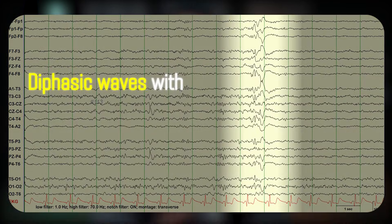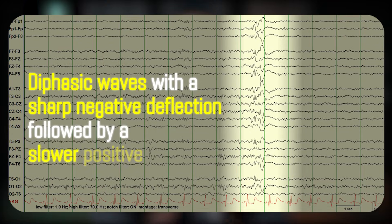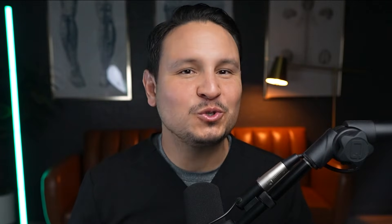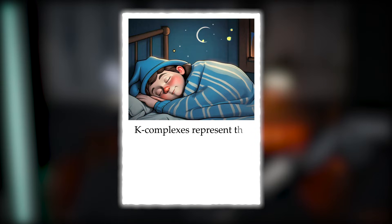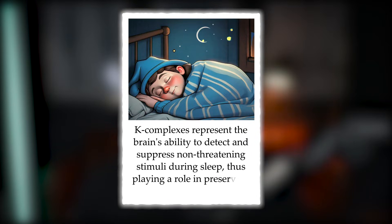K-complexes are high amplitude, diphasic waves with a sharp negative deflection followed by a slower positive wave. These waves are most often observed in the frontal-central regions and can be spontaneous or evoked by external stimuli such as sudden auditory sounds. Most research suggests that K-complexes represent the brain's ability to detect and suppress non-threatening stimuli during sleep.